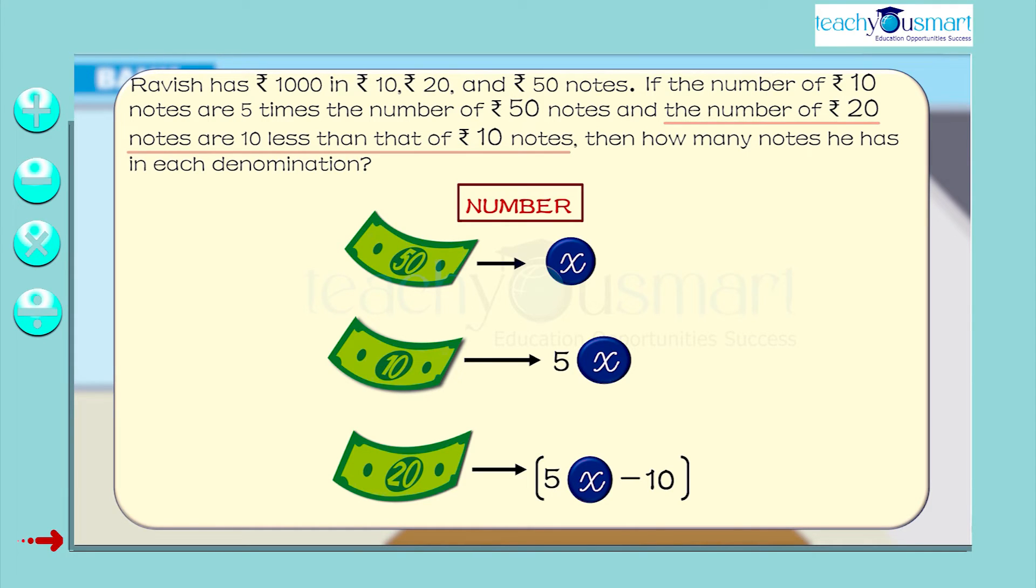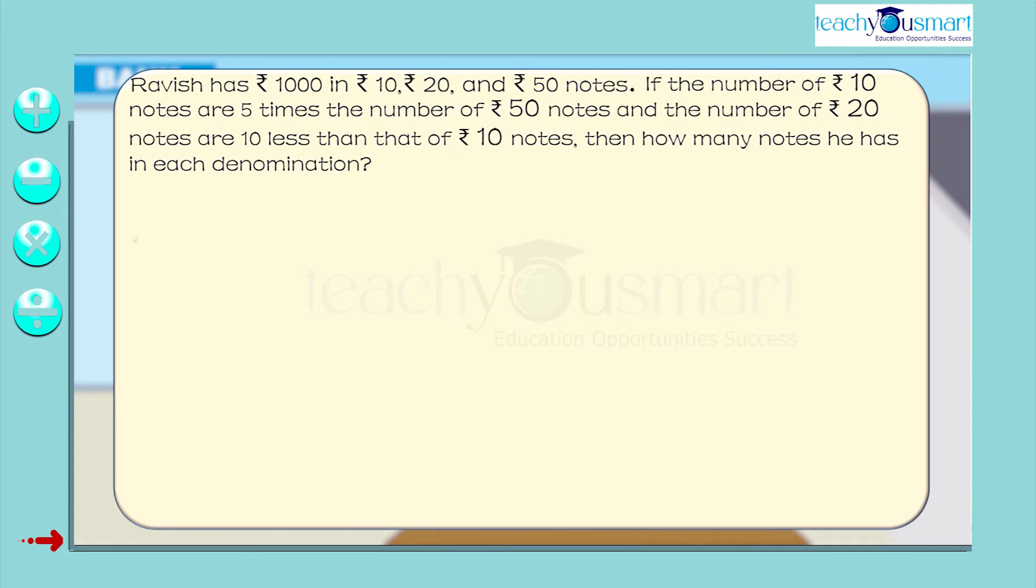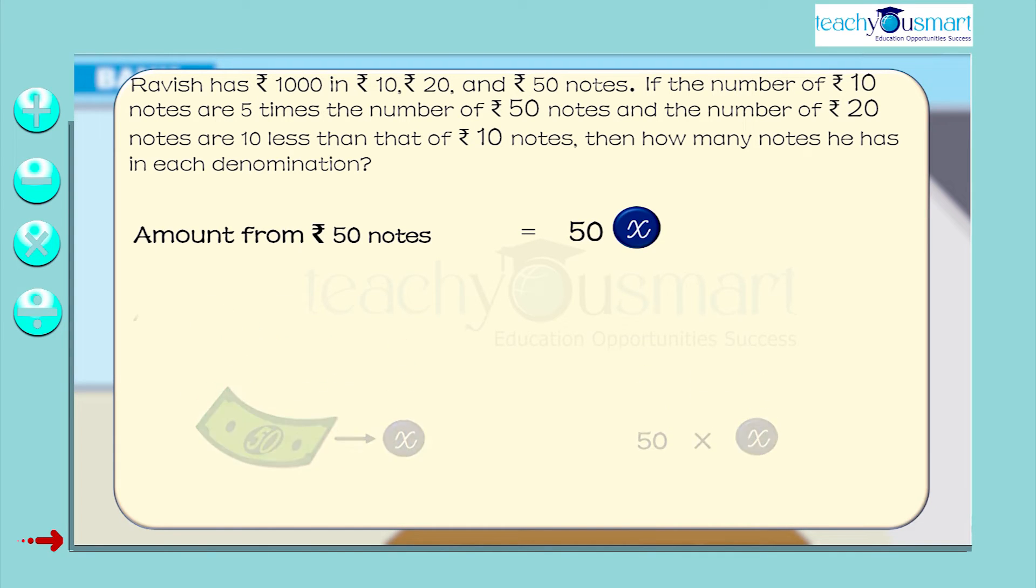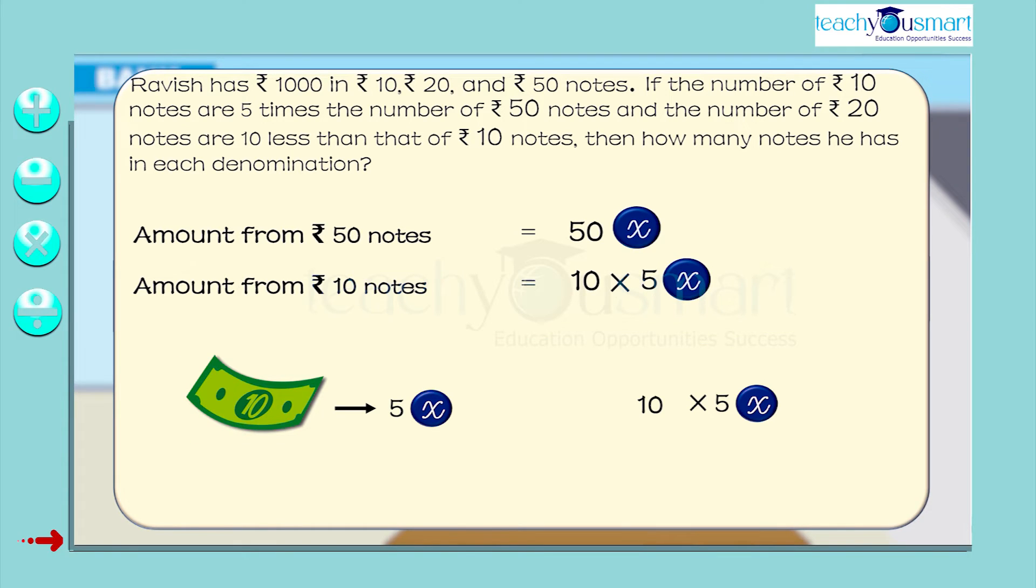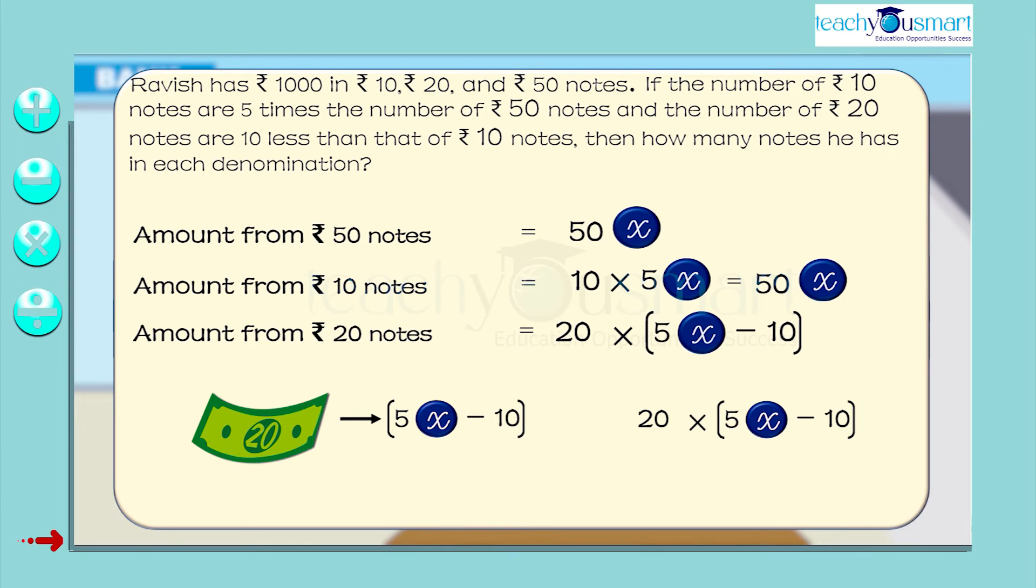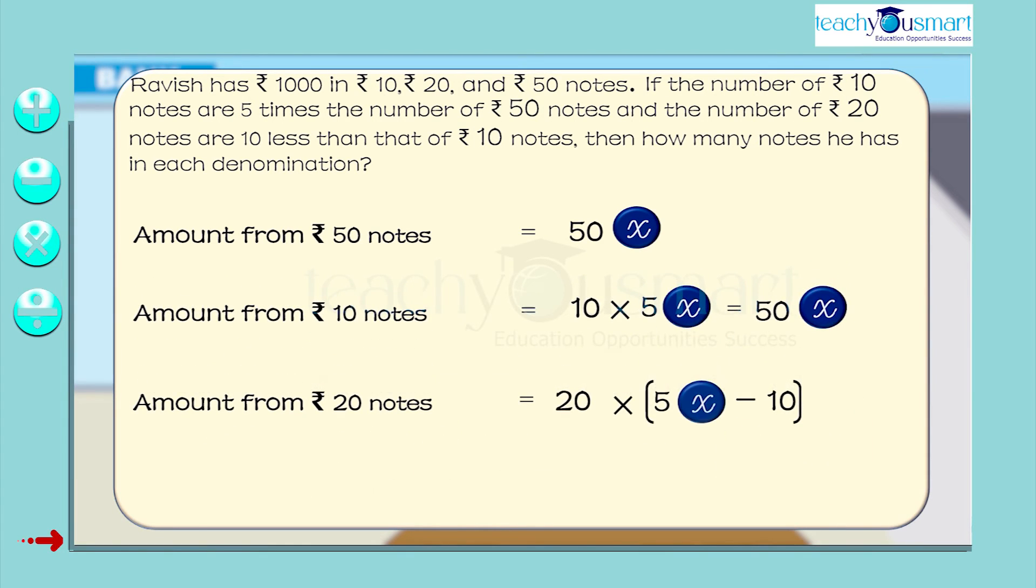Now, we have to calculate the amount from each denomination. That is, the amount from 50 rupee notes is 50 multiplied by x equals 50x. The amount from 10 rupee notes is 10 multiplied by 5x equals 50x. And the amount from 20 rupee notes is 20 multiplied by 5x minus 10, which is equal to 100x minus 200.